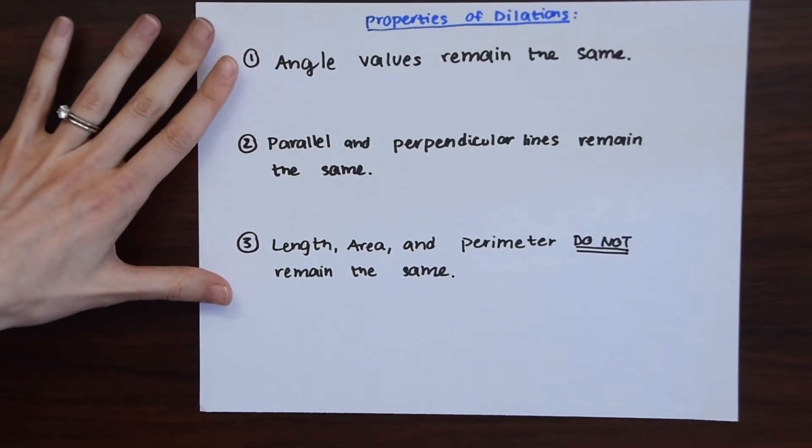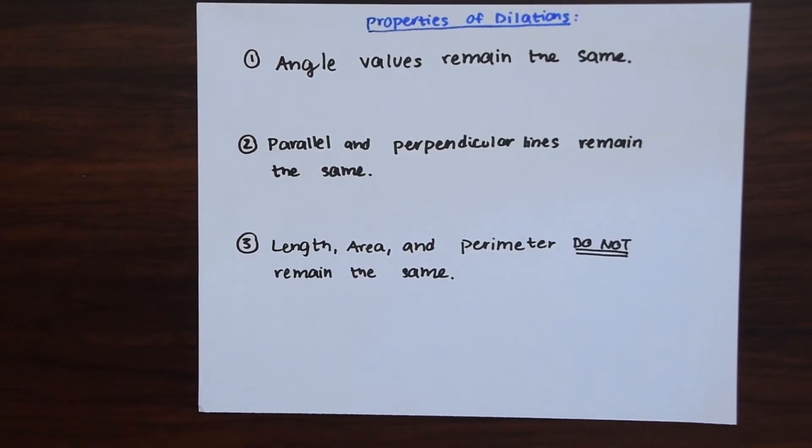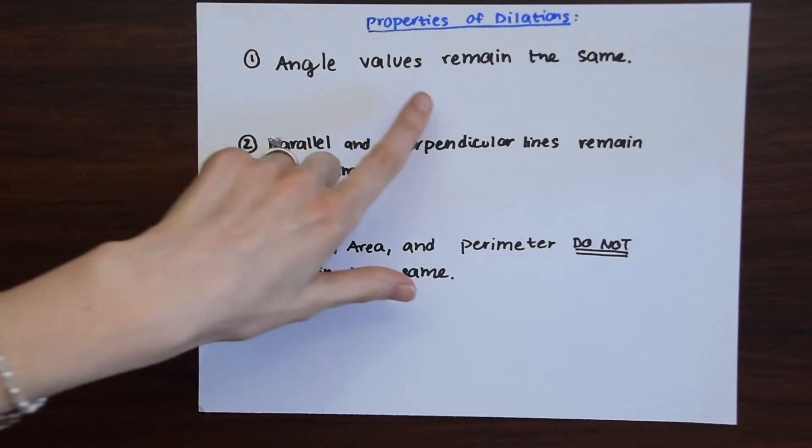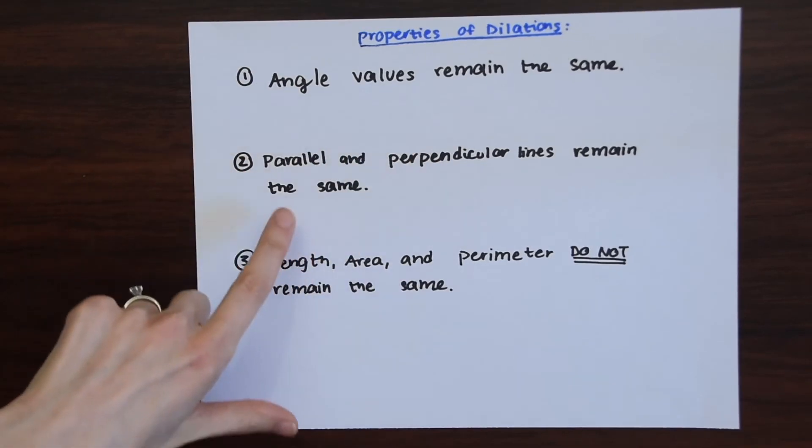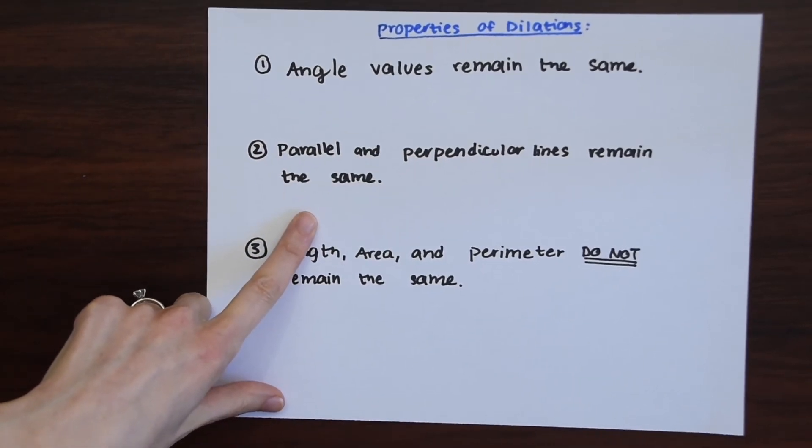So before we look at an example there's some properties of dilations you're going to want to know about. They're a type of transformation that's kind of the black sheep of the transformation family in geometry because things are not always the same after you dilate something. So the angle values remain the same, the parallel and perpendicular lines remain the same after a shape is dilated.